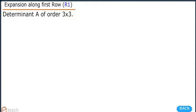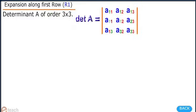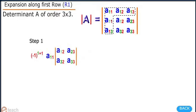Expansion along first row R1: determinant A can be expanded in 3 steps. The expansion of determinant A is equal to (-1)^(1+1) times A11 into the 2x2 minor with elements A22, A23, A32, A33...